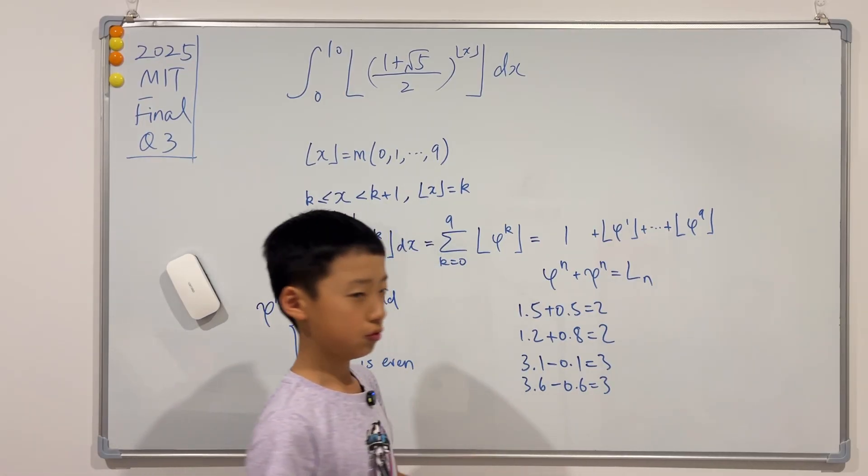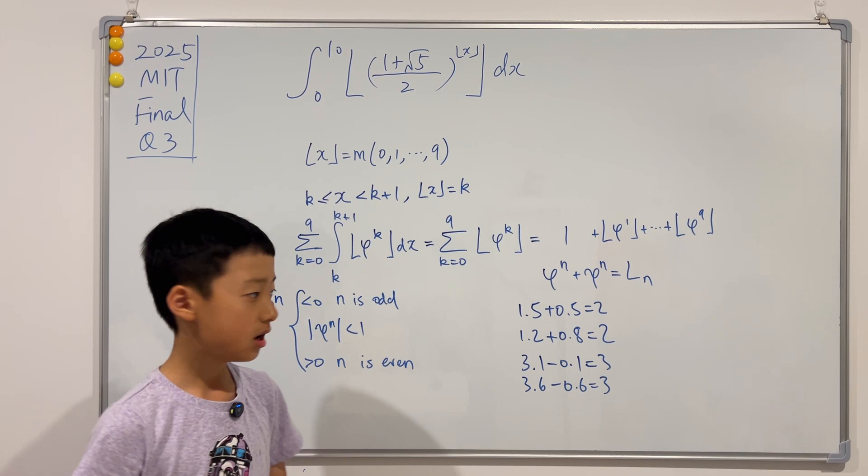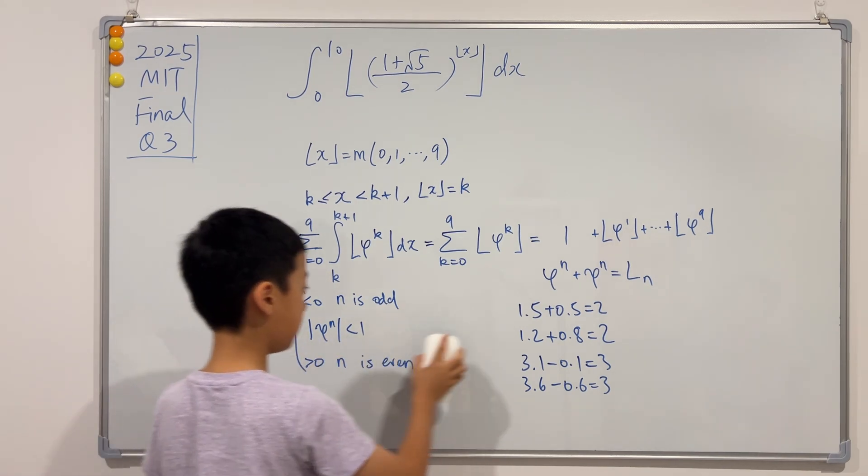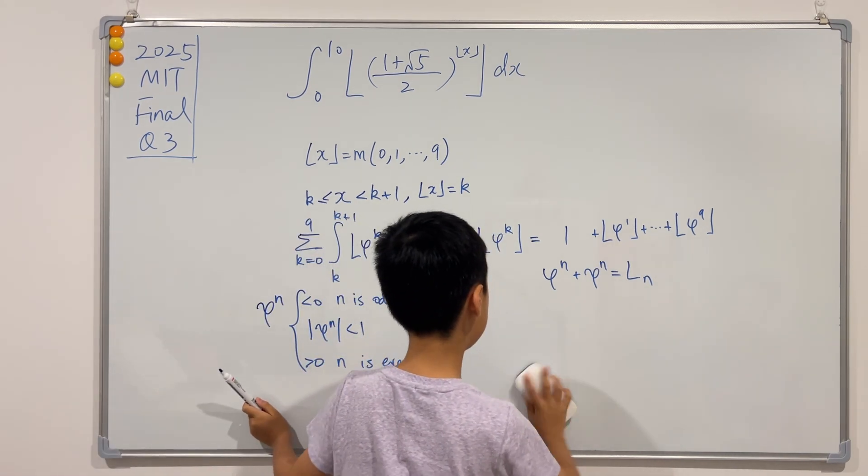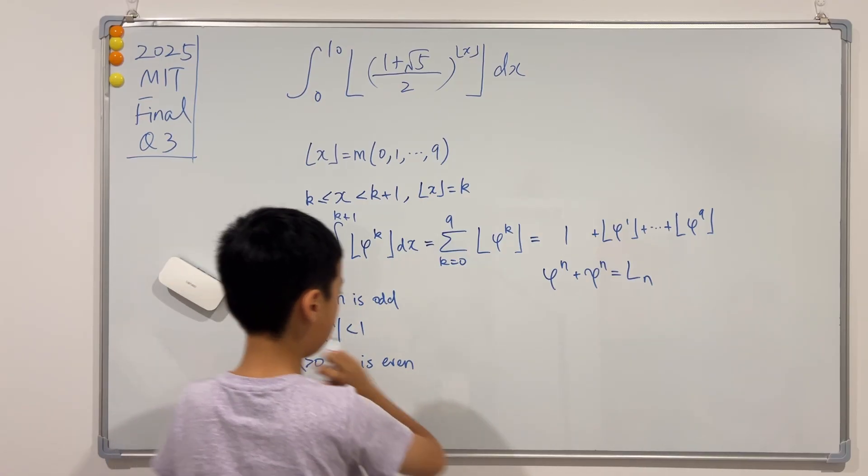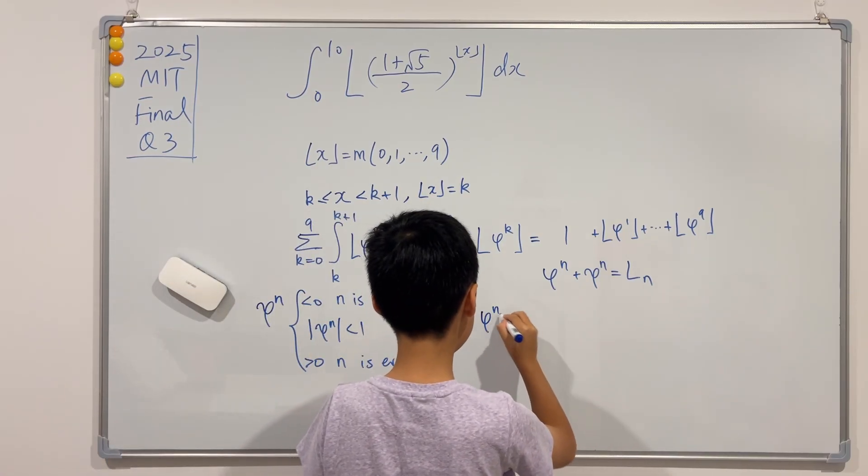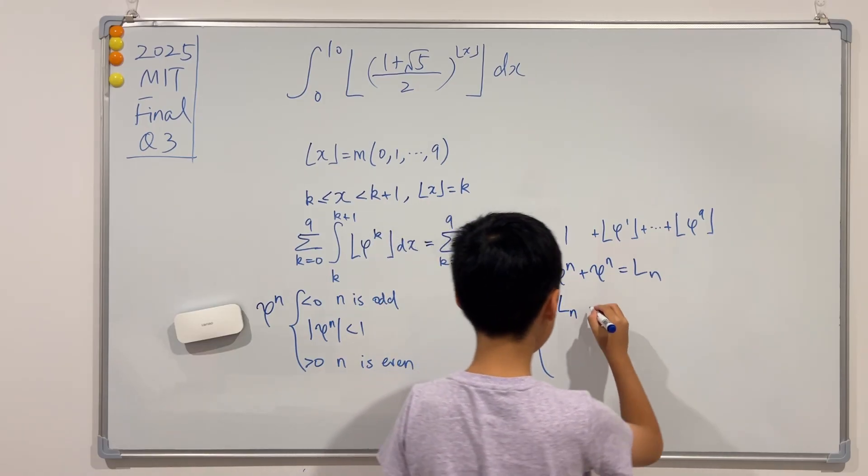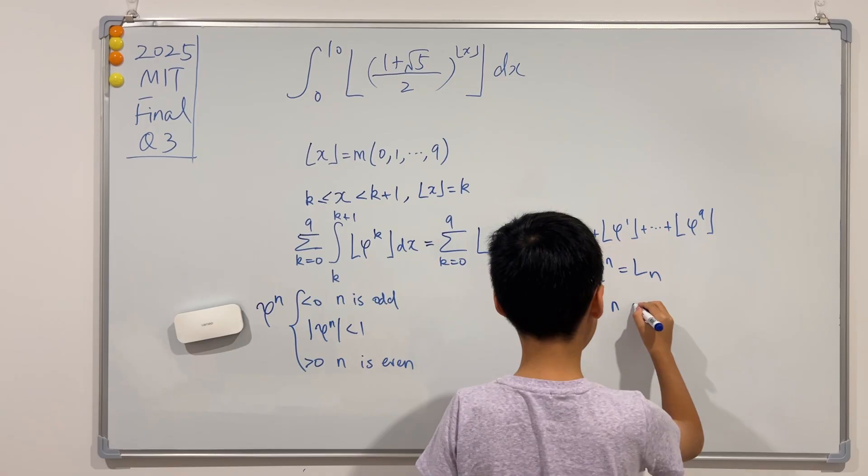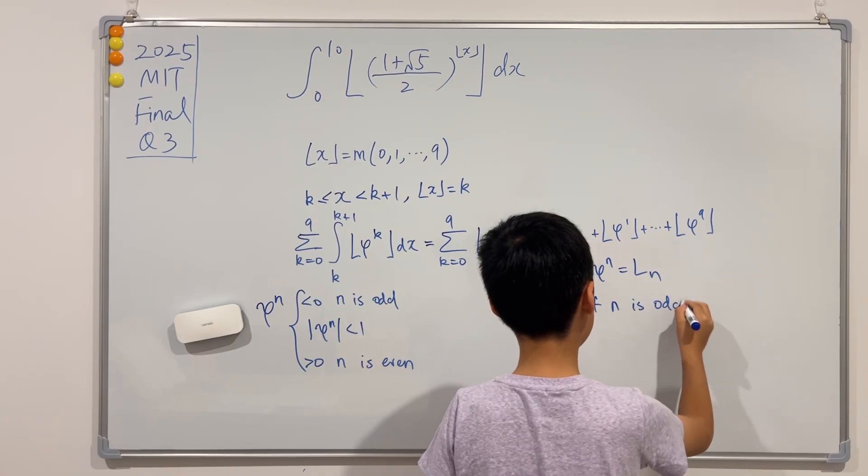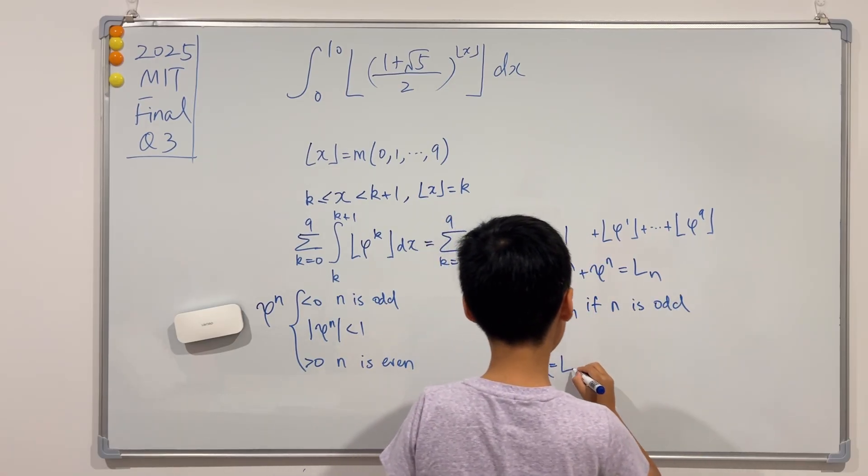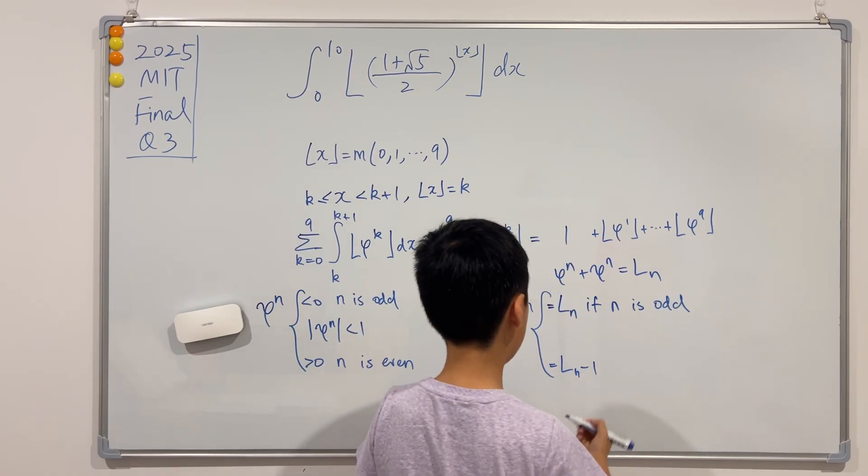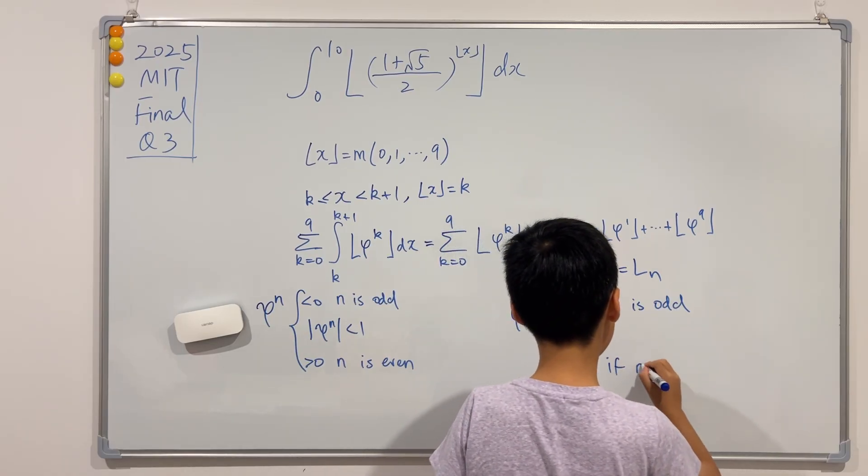So if we just change this into these properties, then you see that it's equal to the nth Lucas number if n is odd, and it's equal to the Lucas nth number minus 1 if n is even.